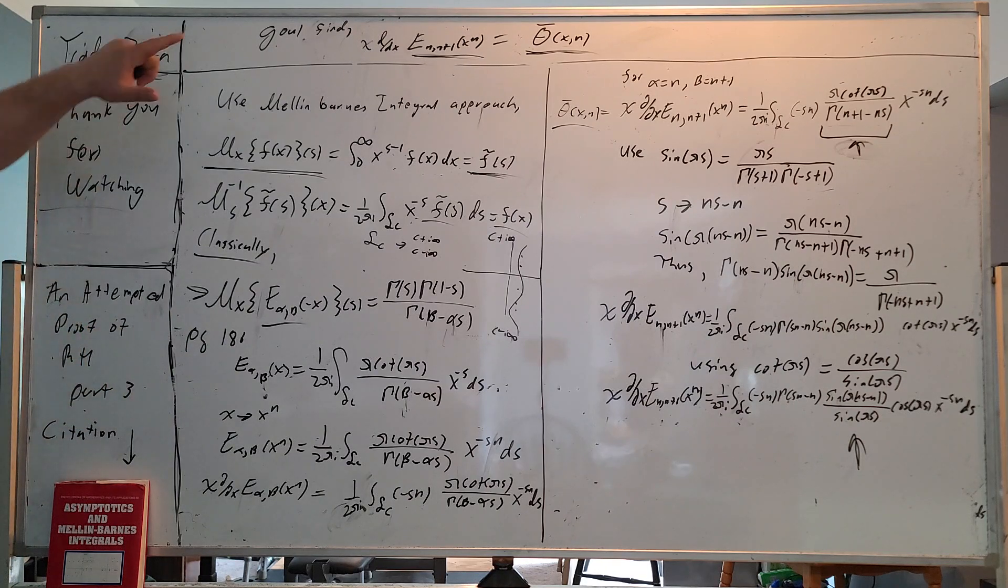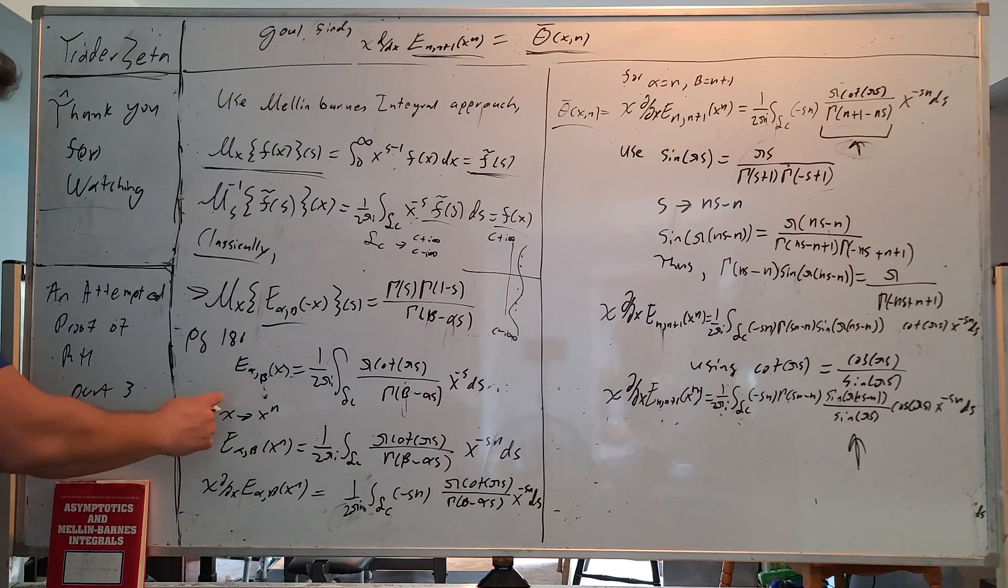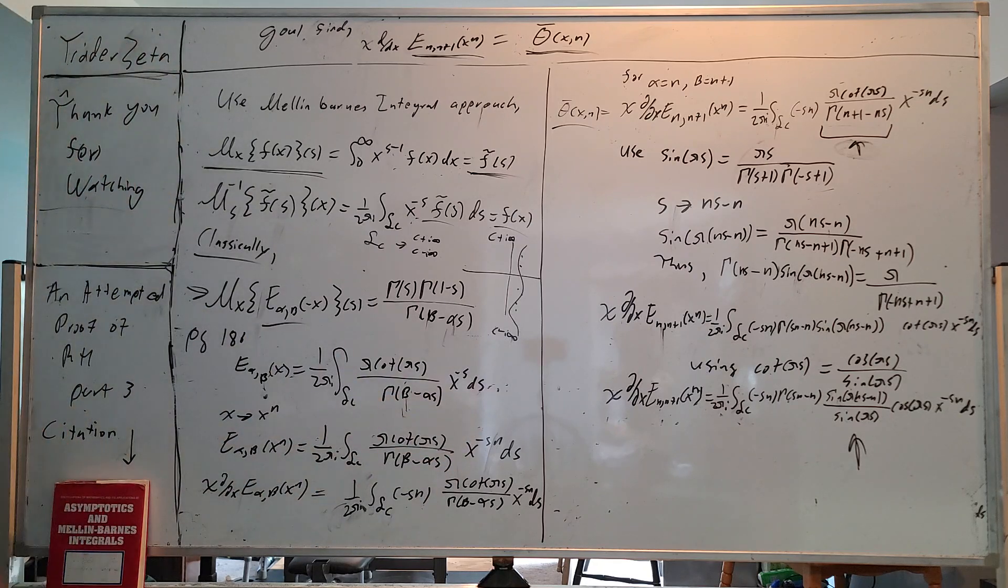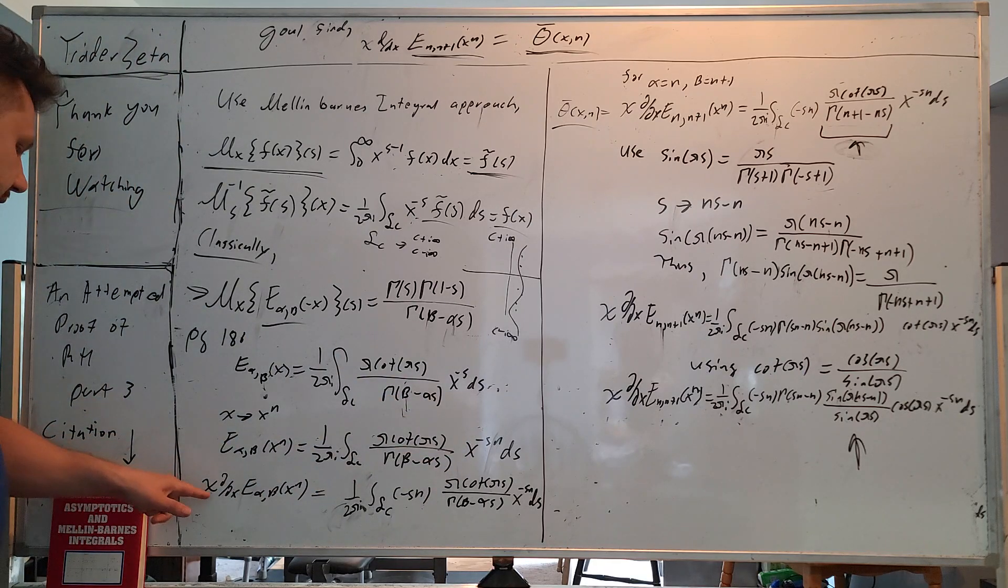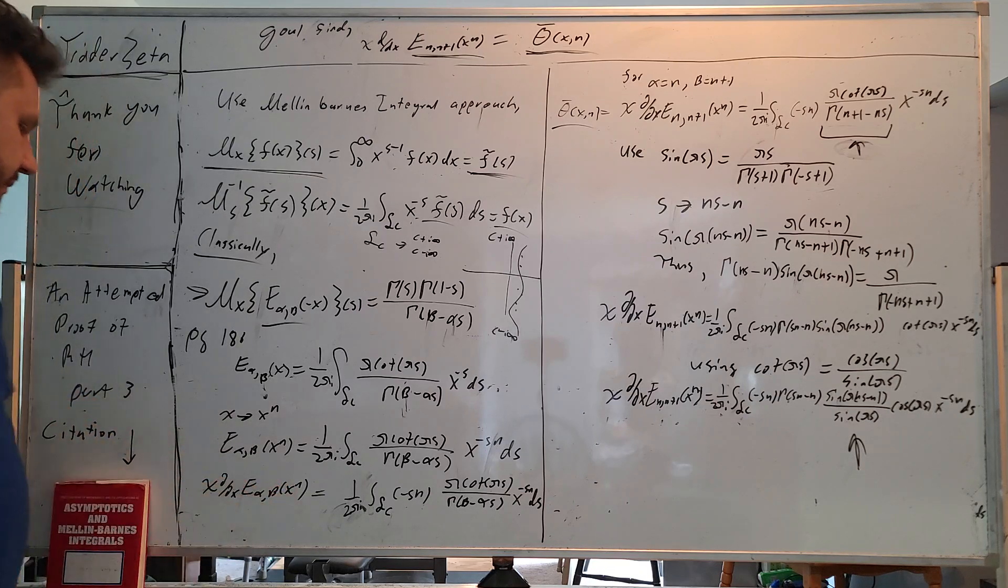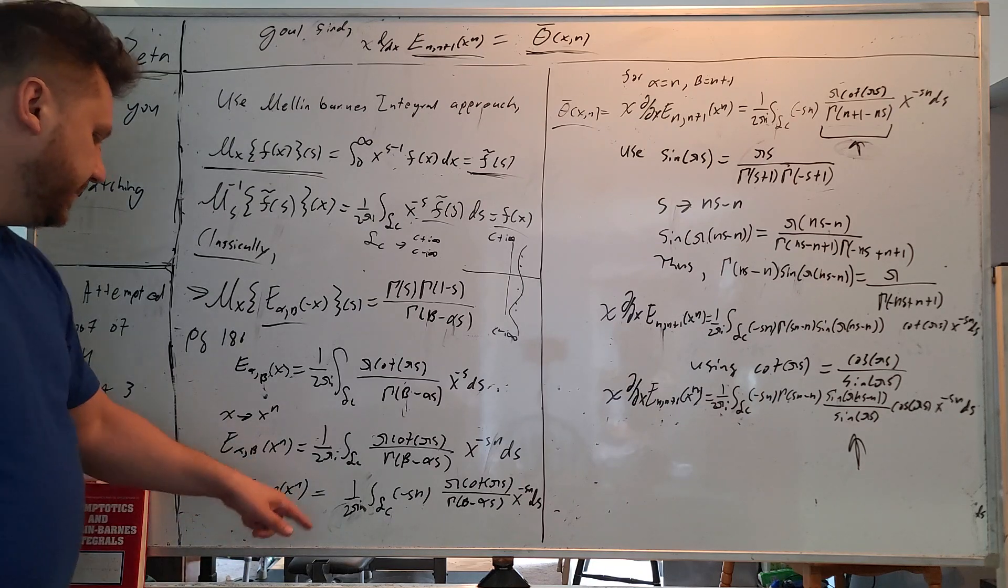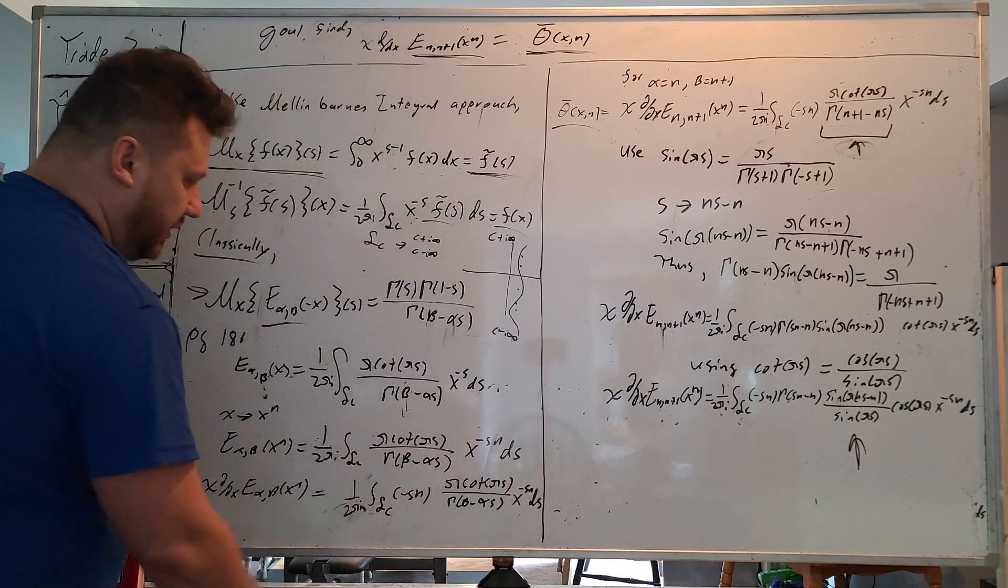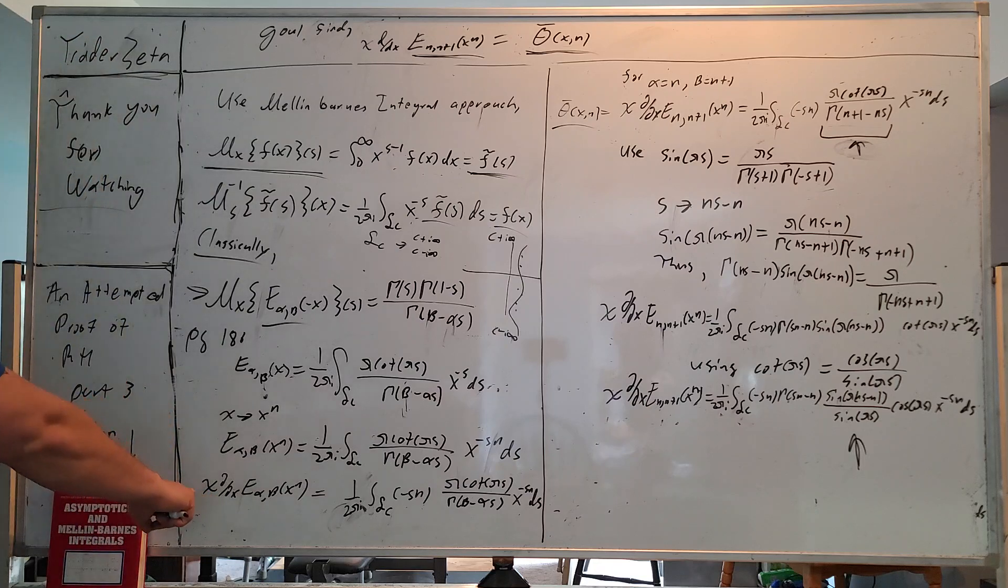Now what we'd like to do is start to construct theta of x, theta bar of xn. So we take x going to x to the n and plug that in. This is a very simple substitution. Now we do x ddx of the Mittag-Leffler function at x to the n, and you can see this comes down here.